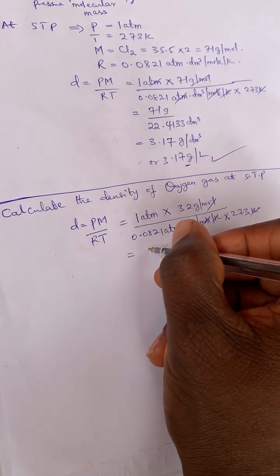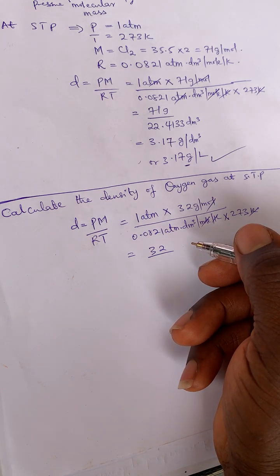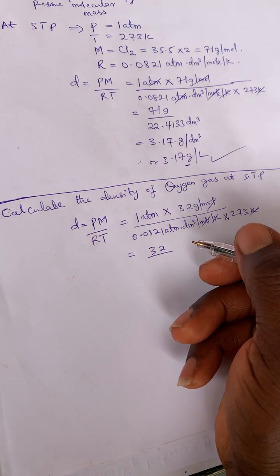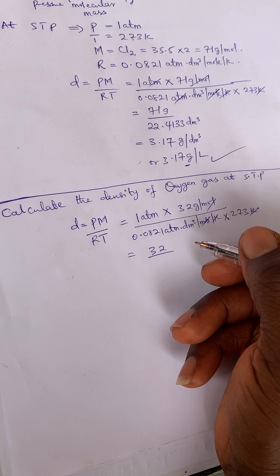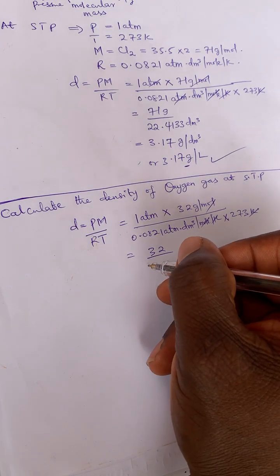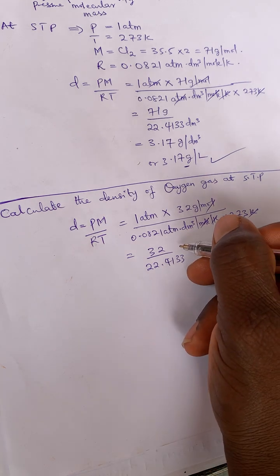So 1 times 32, so we have 32 divided by 0.0821, multiply 273, and we shall have 22.4133.